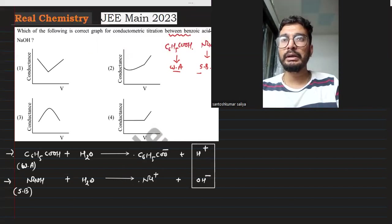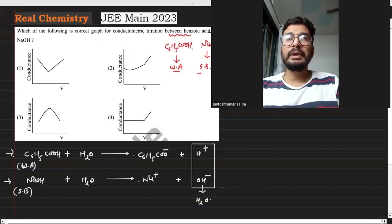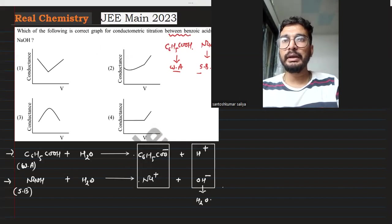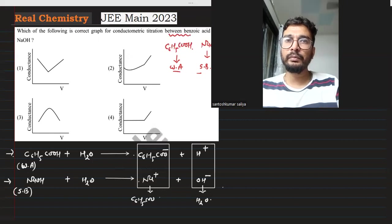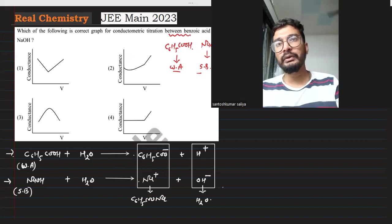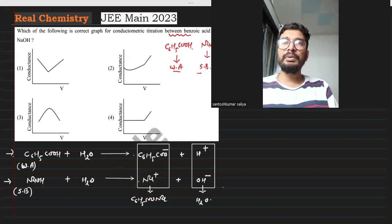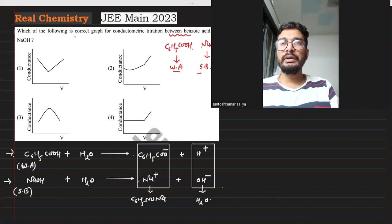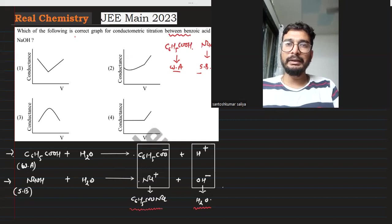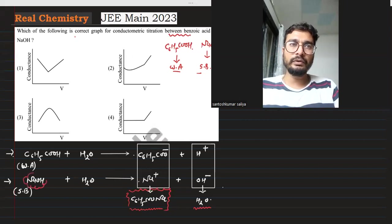When we titrate, H+ and OH- neutralize to form H2O. So C6H5COO- remains in the solution.